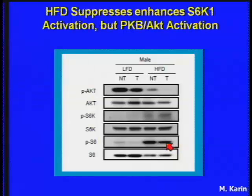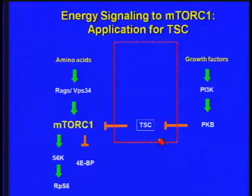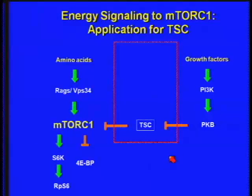Now we're trying to ask downstream: is it S6 kinase, is it 4EBP1 that's responsible for this tumor progression? But it made us start to think about the fact that in these animals, when you put them on a high-fat diet, glucose begins to rise in the blood. So how does glucose drive this pathway?